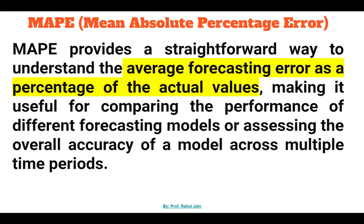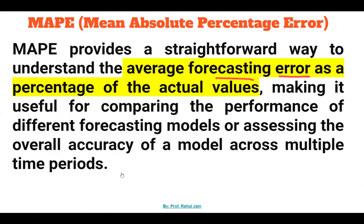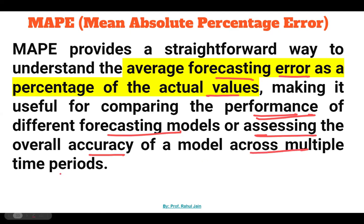MAPE provides a straightforward way to understand the average forecasting error — in this case 6.29 percent is the average forecasting percentage error of this model on the actual values. This makes it useful for comparing the performance of different forecasting models or assessing the overall accuracy of a model across multiple time periods.